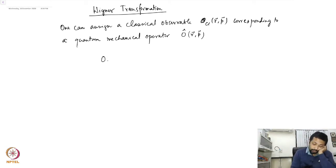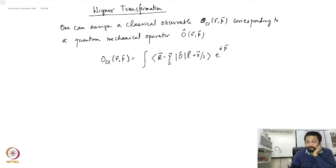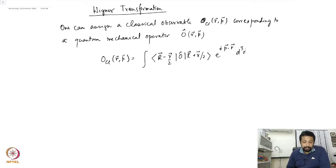The prescription to do that is: O_Cl(R,P) equals the integral of ⟨R minus r/2 | O-hat | R plus r/2⟩ times e to the power plus i·p·r, d³r.